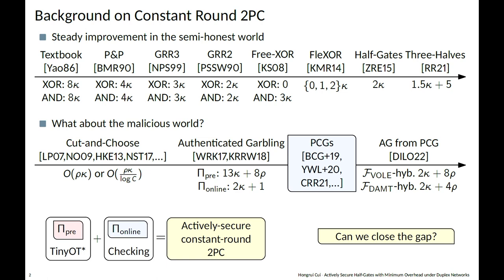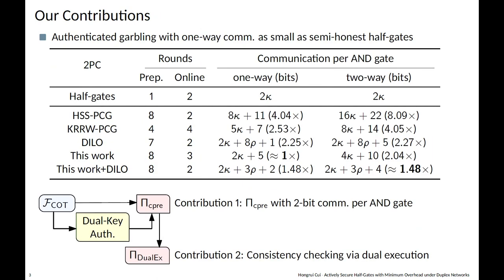Generating OT-like correlations has been greatly accelerated by pseudorandom correlation generators. An actual idea, studied by Ditsmar et al. in last year's Crypto, is to generate authenticated garbling from PCGs. In the DILO paper, we get amortized communication of 2κ + 8ρ bits in the VOLE hybrid model, or 2κ + 4ρ bits in the multiplication hybrid model. The progress is significant compared to prior art, but compared with semi-honest half gates there is still a gap. Can we close this gap?